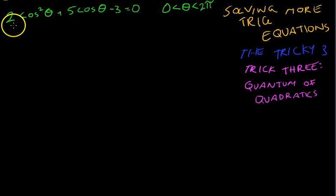So this is what we're dealing with here: 2 cos squared theta plus 5 cos theta minus 3 equals 0, and 0 is less than theta, which is less than 2 pi.